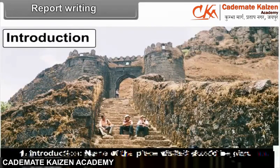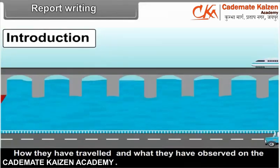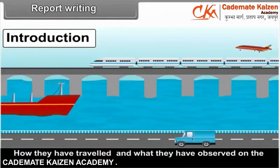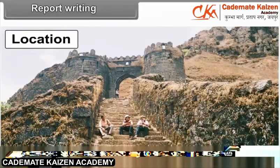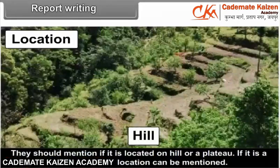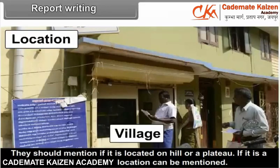1. Introduction: the name of the place visited should be given. Its location can be marked on a map. The distance from the school to the place can be calculated. How they traveled and what they observed on the route can be noted. 2. Location: students should try to find out the relative location of the field. They should mention if it is located on a hill or a plateau. If it is a village, its administrative location can be mentioned.